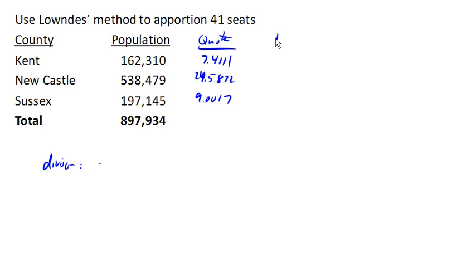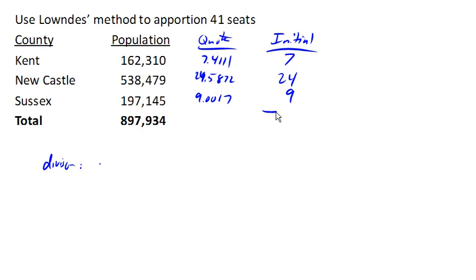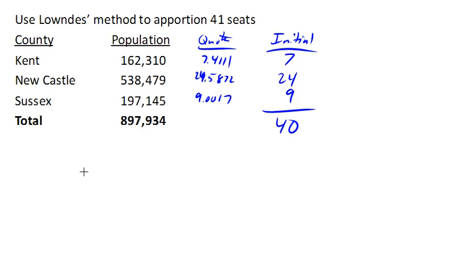Our initial allocation is just like Hamilton's method, where we round down and chop off the decimal part. We look at how many seats are allocated — in this case, only 40 seats are allocated, so we've got one more seat to allocate.